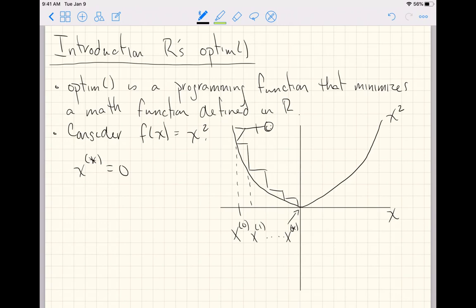the function optim will tell us when it's done running. After some number of steps, the value x that minimizes the function f, or at least an approximation of the value that minimizes the function f, is x star. Whatever optim returns for x star is going to be optim's best guess for the value that minimizes the function f.